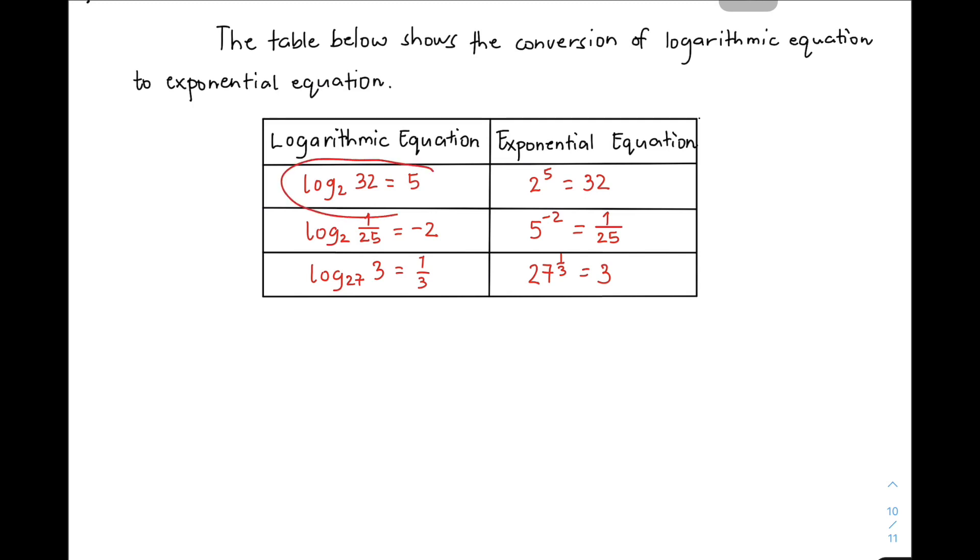We have here the logarithm of 32 to the base of 2 is equal to 5, and the equivalent part of that logarithmic equation to exponential equation is 2 raised to 5 is equal to 32.